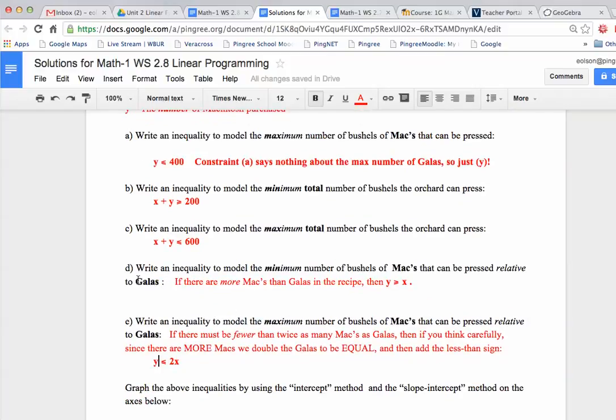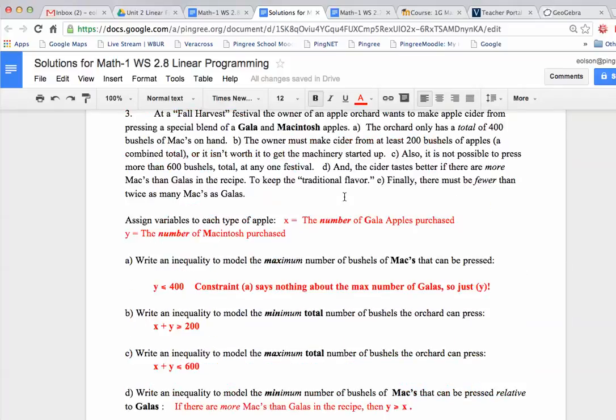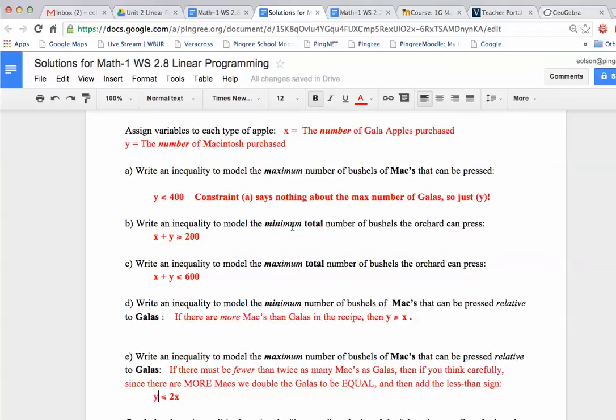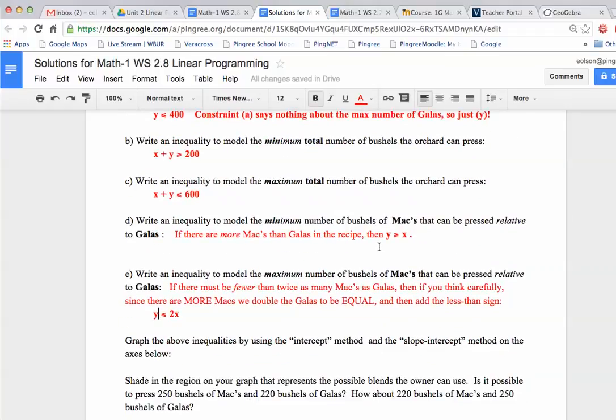So finally, or not finally, at part D it says write an inequality to model the minimum number of Macs relative to Galas. Well there are two things. If there are more Macs than Galas in the recipe, which you're told up here in this part that the recipe requires that there are more Macs than Galas. So if that's true, then you've got to say Y is greater than X.